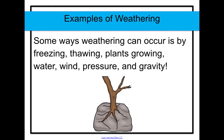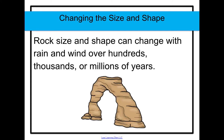Some ways weathering can occur is by freezing, thawing, plants growing, water, wind, pressure, and gravity. An important note is that it happens over a long period of time. Rock size and shape can change with rain and wind over hundreds, thousands, or millions of years.